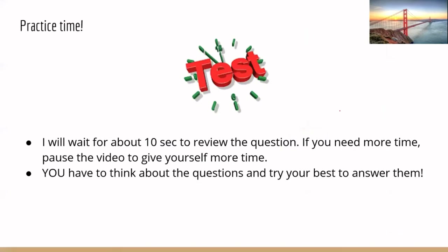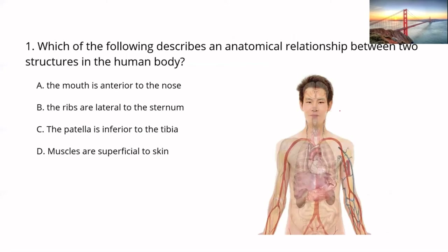Let's practice with some questions. Question one — a few seconds to answer. Option A says the mouth is anterior to the nose. The mouth is below the nose, so that's not correct — the mouth is inferior to the nose. Option B says the ribs are lateral to the sternum. The sternum is right in the middle and the ribs are on the sides, so this seems correct. Let's check all options before deciding.